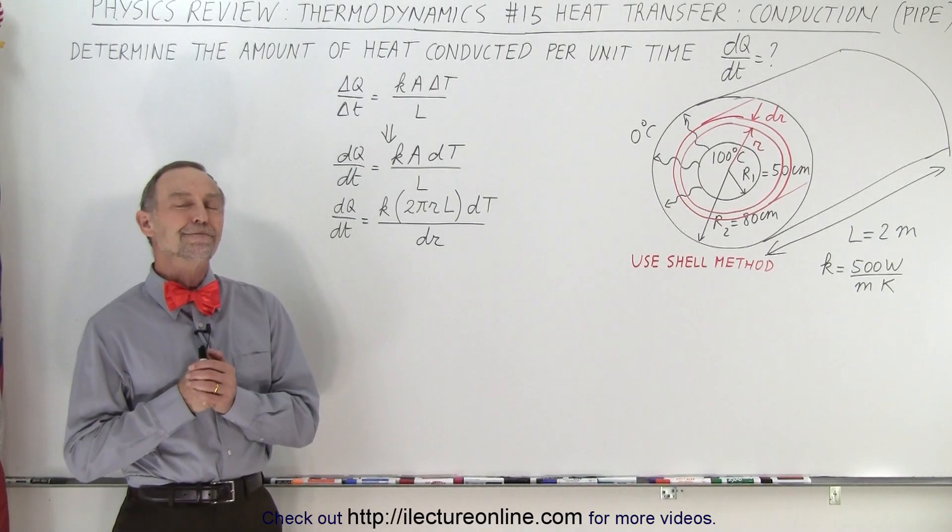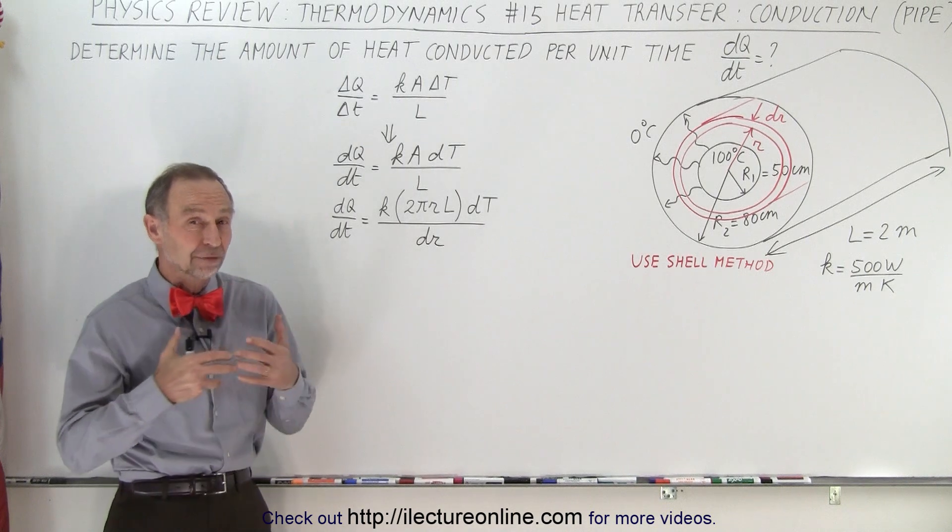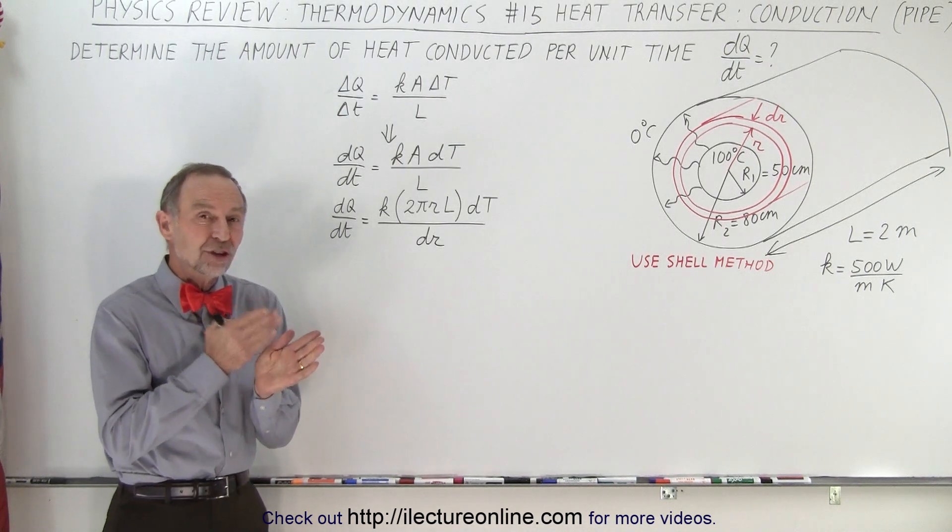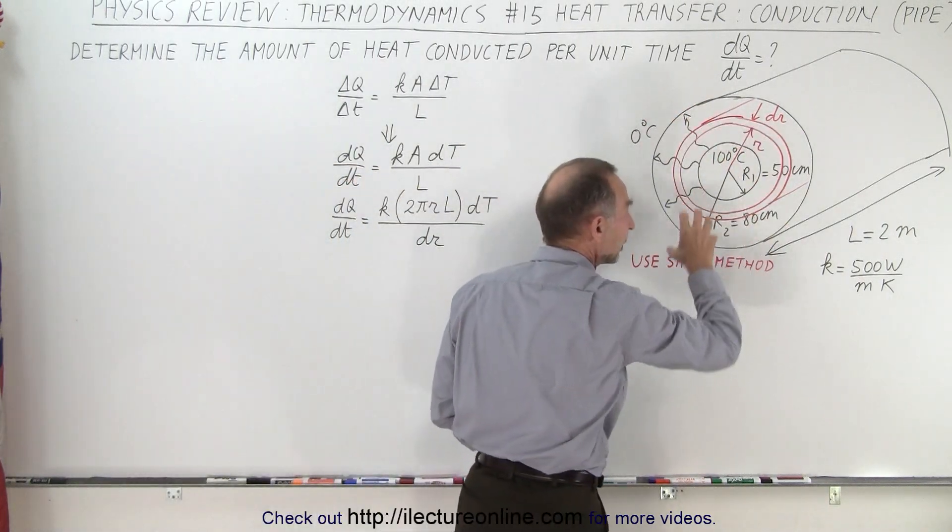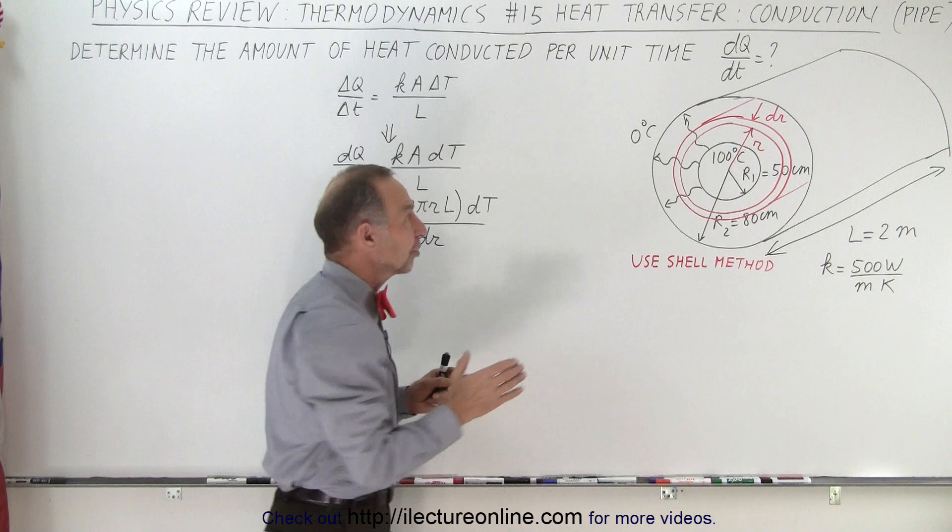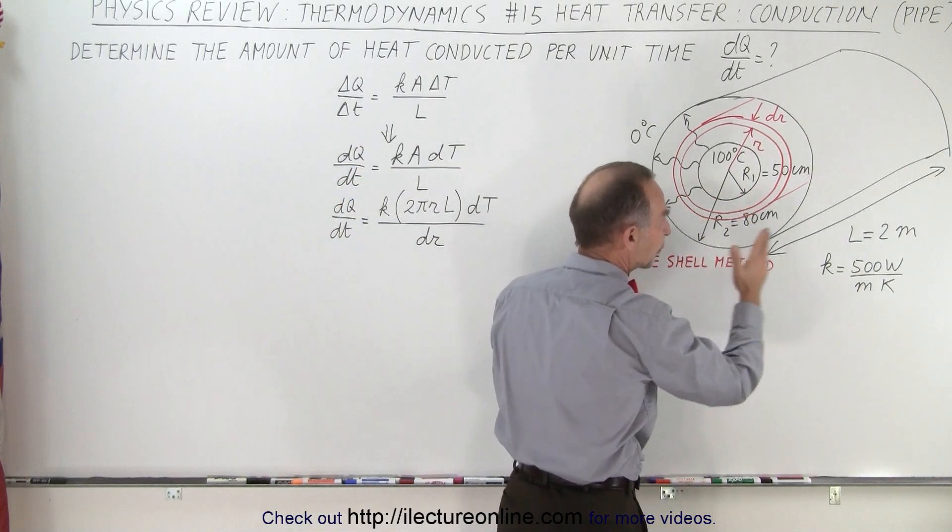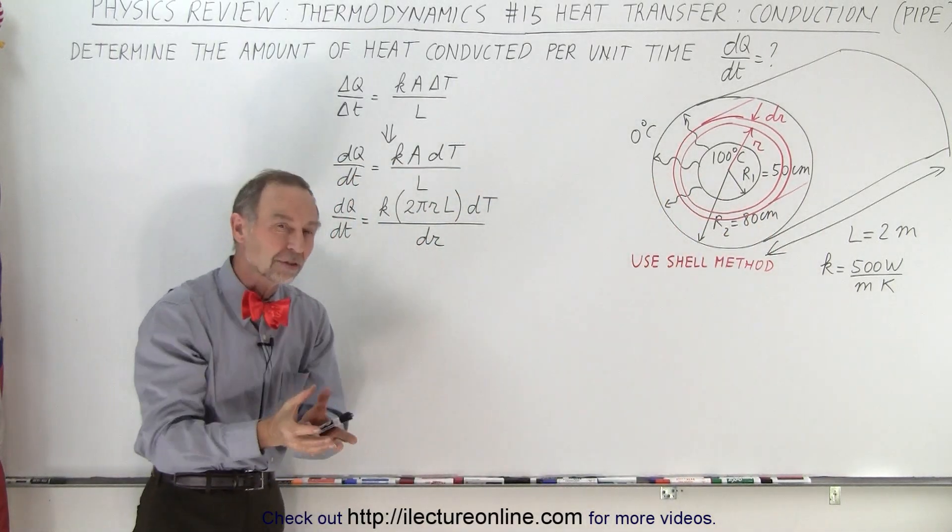Welcome to iLectureOnline. We should know how to handle a problem like this where you have to use calculus to solve it because the shape of the object—in this case insulation around a pipe—changes as the thickness changes. The cross-sectional area where the heat travels through from inside to outside changes with the thickness of the insulation.